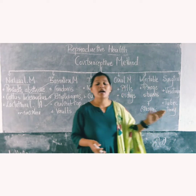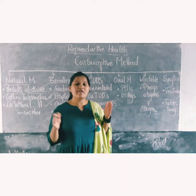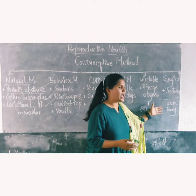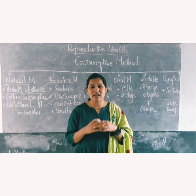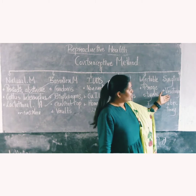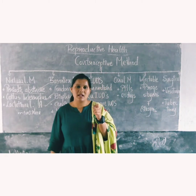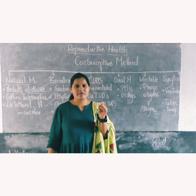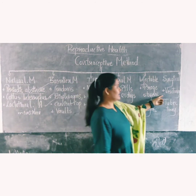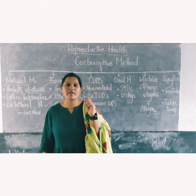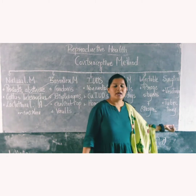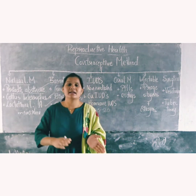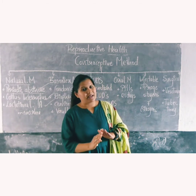Coming to the last method, the surgical method, also called sterilization, where males and females are advised to stop normal pregnancy permanently. Either the male or female gamete transport is blocked or removed. In the case of the male, the process is called vasectomy, where a part of the vas deferens is removed. In the case of females, the procedure is called tubectomy, where a part of the fallopian tube is removed. This prevents the fusion of male and female gametes, directly preventing pregnancy.